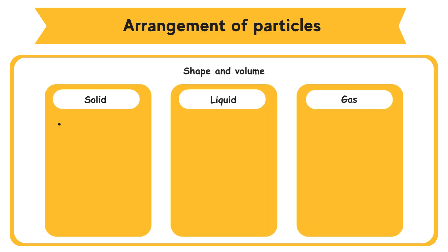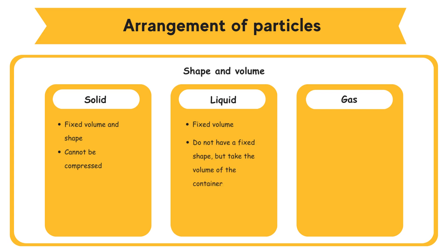Shape and Volume: Solids have a fixed volume and shape. Solids cannot be compressed. Liquids have a fixed volume. Liquids do not have a fixed shape, but take the shape of the container. Liquids cannot be easily compressed. Gases do not have a fixed shape and volume. Gases can be easily compressed.